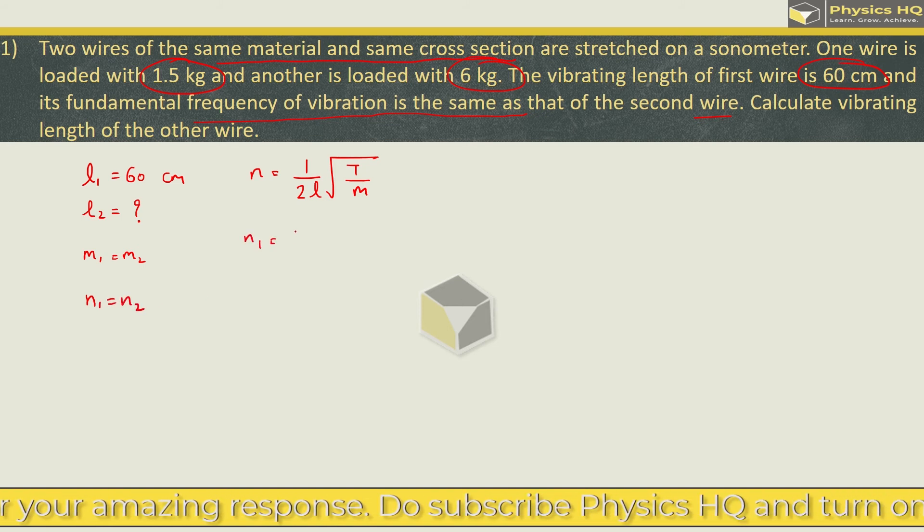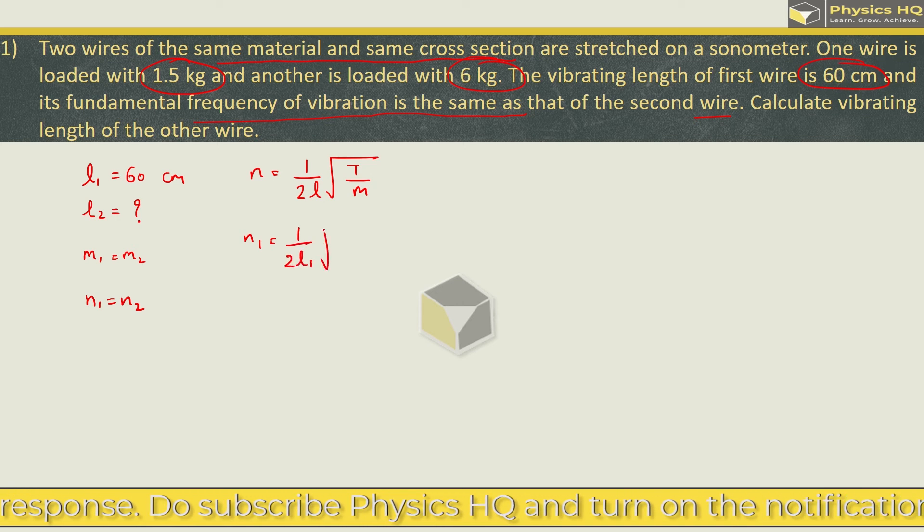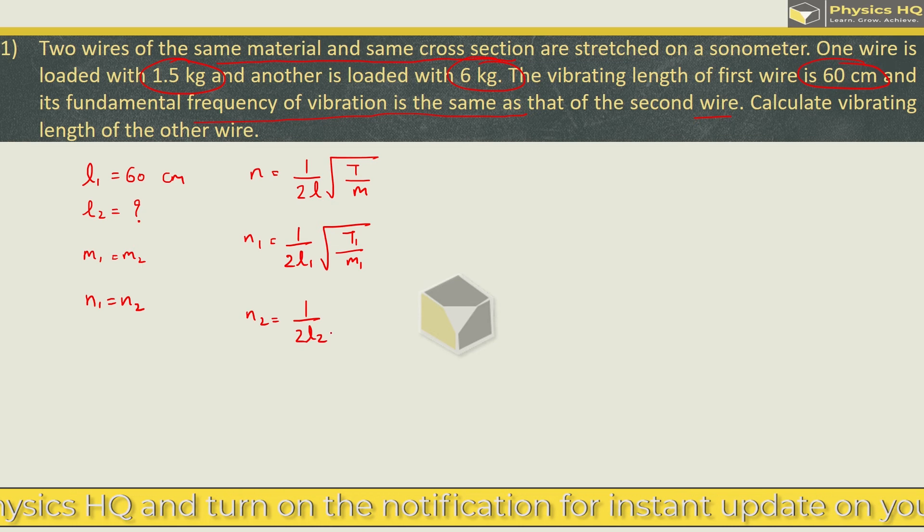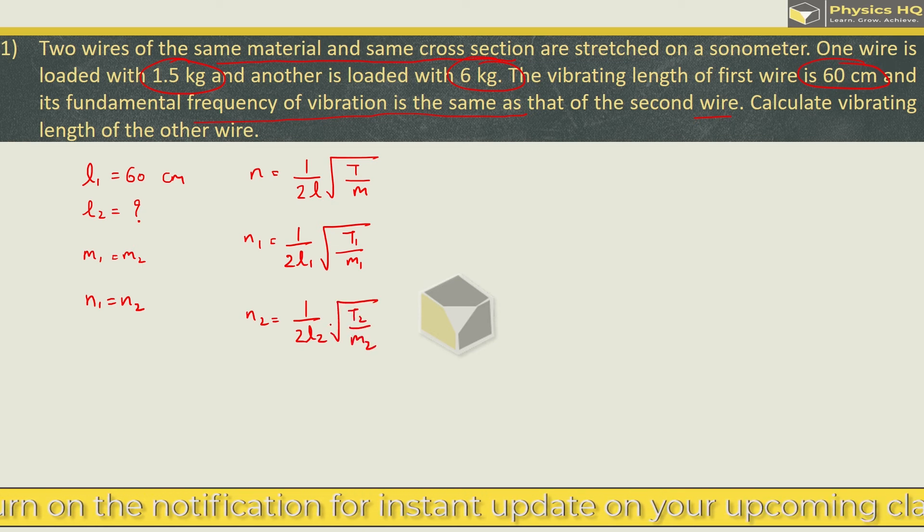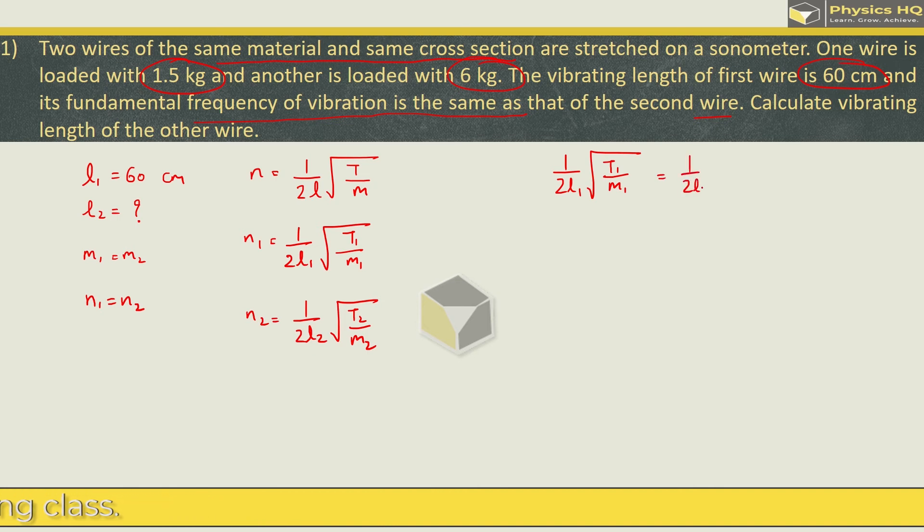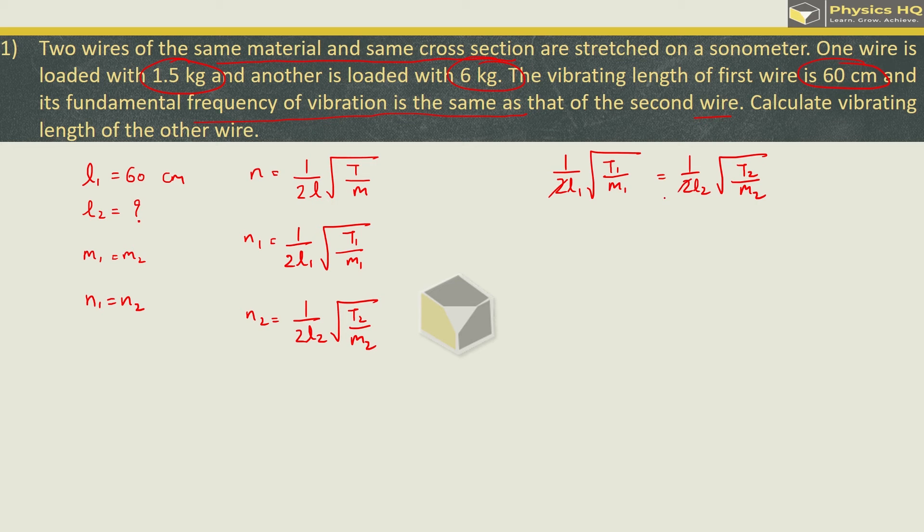Since they are of same material and same cross section it will be equal. Next they have also said that the fundamental frequency of vibration is same, that means N1 will be equal to N2 in this case. So if I write down the formula in terms of N1 it will be 1 upon 2 times L1 root of T1 by M1 and N2 will be 1 upon 2L2 root of T2 by M2. So since they are equal we can equate them.